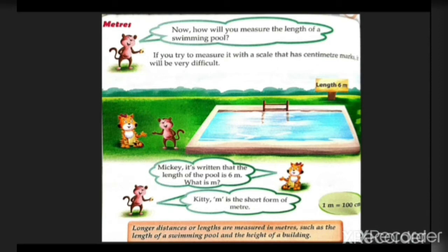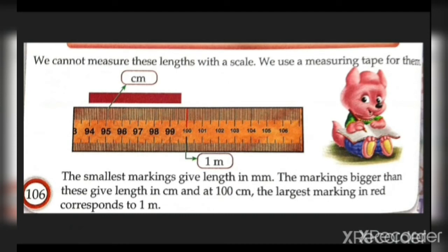Mickey, it is written that the length of the pool is 6 meters. What is meter? We can measure these lengths with a measuring tape. We are using a measuring tape. One meter is 100 cm, and scale is 15 cm. The smaller markings give length in mm. The markings bigger than these give length in centimeter, and at 100 cm the largest marking in red corresponds to 1 meter.